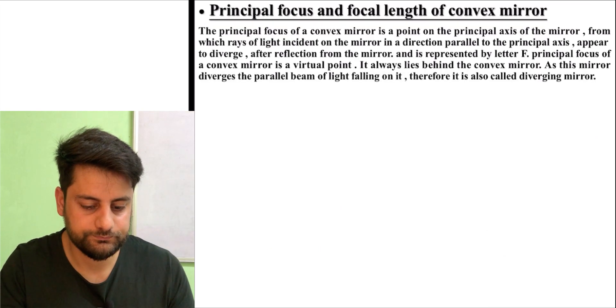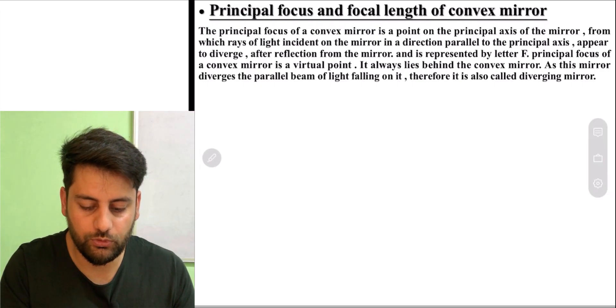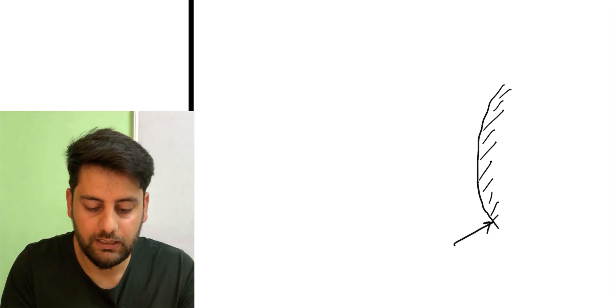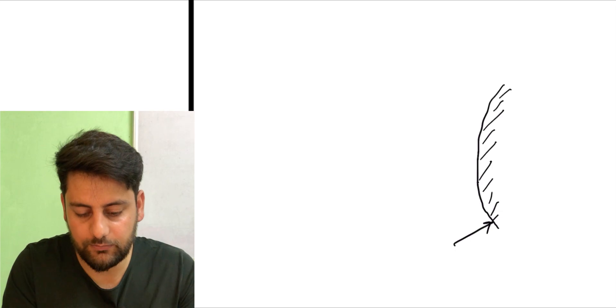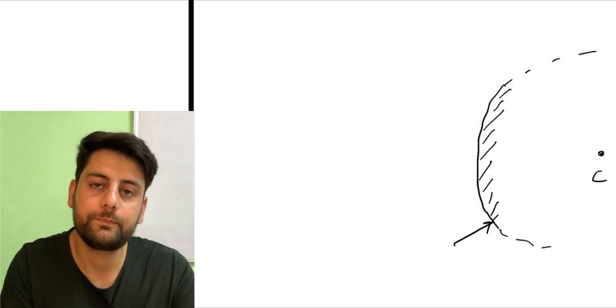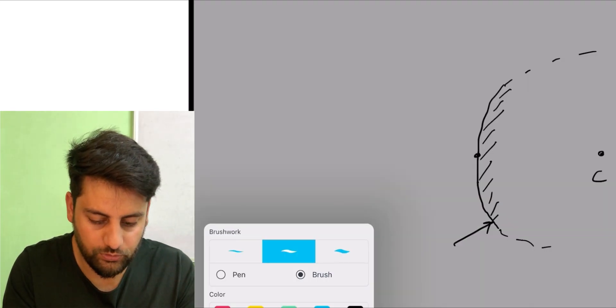Now let's talk about the convex mirror. How do we define the principal focus of a convex mirror? The outer part of this convex mirror is reflective — the reflection is happening from this side. If you try to complete the curvature, you can see that the center is here. And obviously this would be its pole.